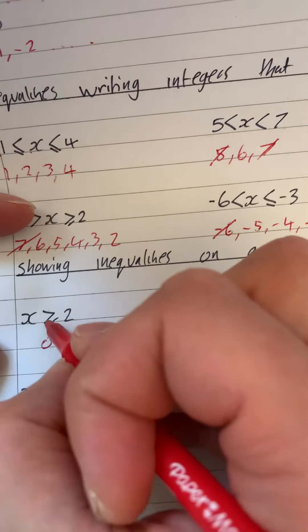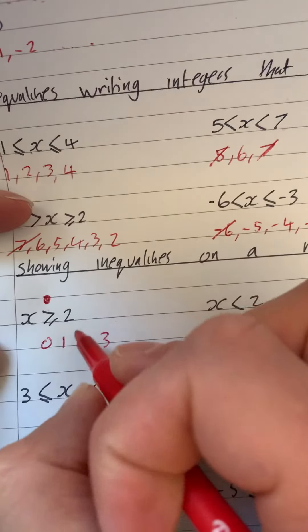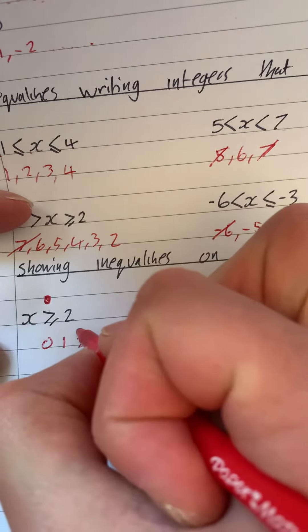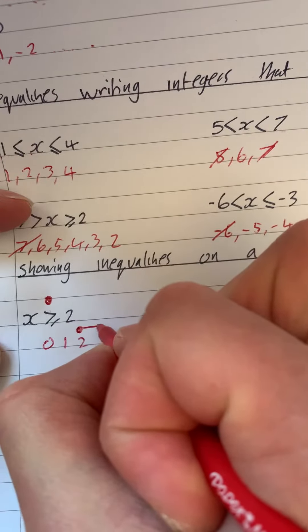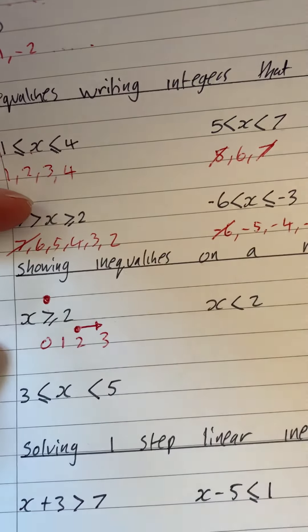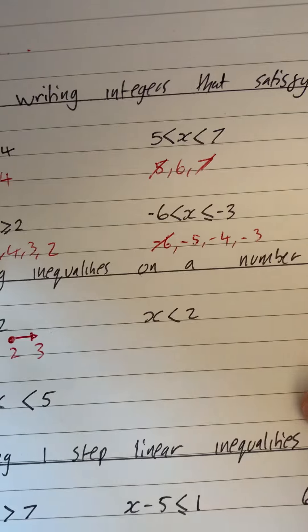Now if it's an equal to, so if it's greater than or equal to or less than or equal to, we do a little circle that's colored in above the number we want. Now the number we're on is two, so we do a little circle above two.